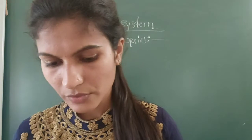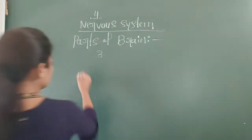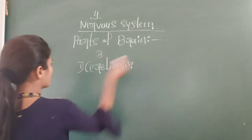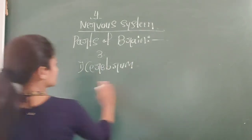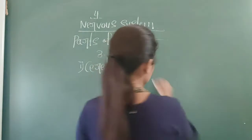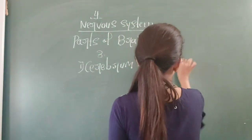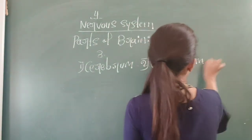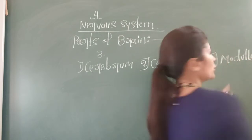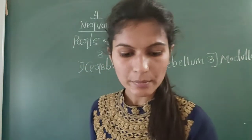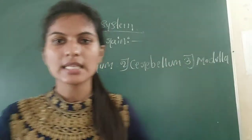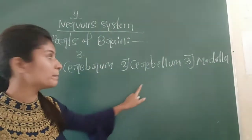The three parts of the brain are: the first one is cerebrum, the second one is cerebellum, and the third one is medulla. Medulla also has one more name — it is called oblongata. So these are the three important parts of the brain.